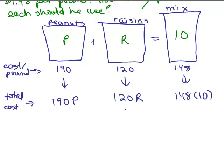Now, what do we do with these three things? Well, I know that what's really going on here is we want the cost to be the same as if I bought the peanuts and raisins separately than if I just bought the whole mix at $1.48 for all 10 pounds. So I want those to be equal.